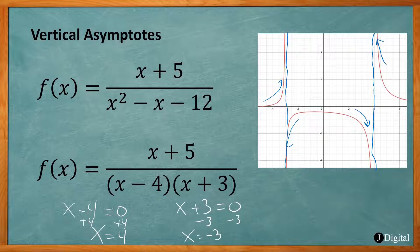So again, you want to factor your denominator, set it equal to 0, and figure out what values of x will cause the denominator to be 0.